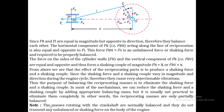The masses rotating with the crankshaft are normally balanced and do not transmit any unbalanced or shaking force on the body of the engine. Since the crankshaft is a rotary part, it can be completely balanced, so its rotation has no effect on the engine body. But the reciprocating part can only be partially balanced. This is the introduction to balancing of reciprocating masses; in the next video we will discuss partial balancing of reciprocating masses.